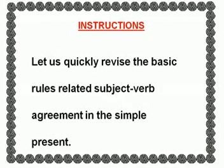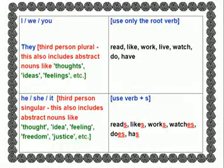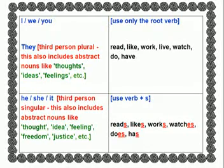Let us quickly revise the basic rules related to Subject-Verb Agreement in the Simple Present. With I, we, you, and third-person plural, we use only the root verb. Third-person plural can also include abstract nouns like thoughts, ideas, and feelings.